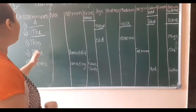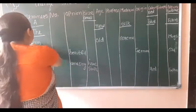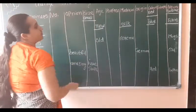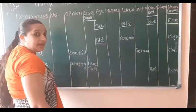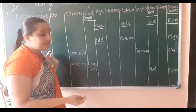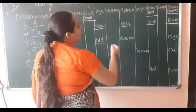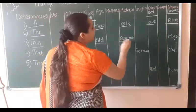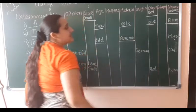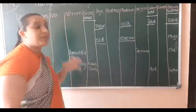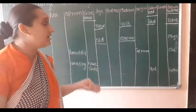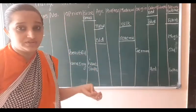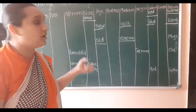Next example: this old ceramic — 'old' is again age, and 'ceramic' is material. So 'this' is the determiner, followed by age and then material.